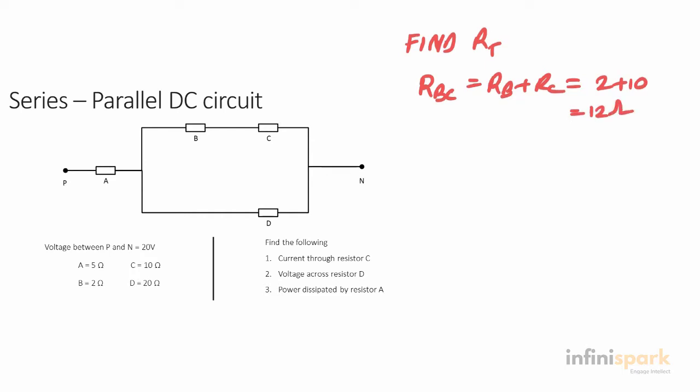Next, we can see in the circuit that RBC and RD are in parallel. So we're going to find the equivalent resistance of RBCD, which will be 1 divided by (1 over RBC plus 1 over RD), which is 1 over 12 plus 1 over 20. That gives us 7.5 ohms.